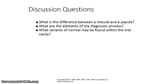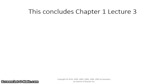Your instructor will now assign groups to get together and discuss various questions such as: What is the difference between a macule and a papule? What are the elements of the diagnostic process? What variants of normal may be found within the oral cavity? Each group leader will then give a presentation to the rest of the class. This concludes Chapter 1, Lecture 3.